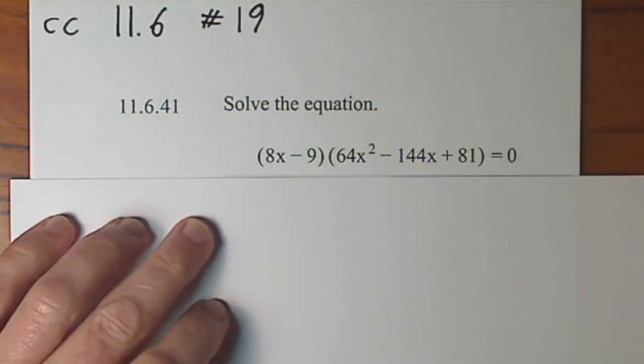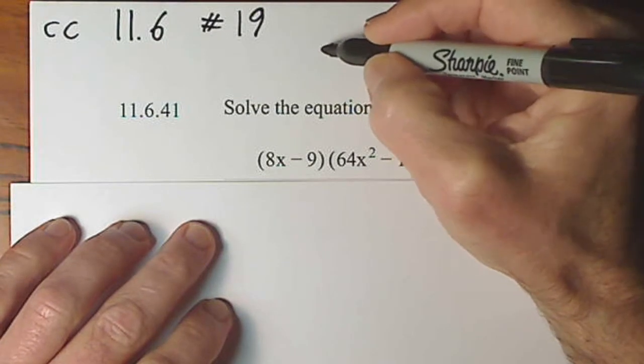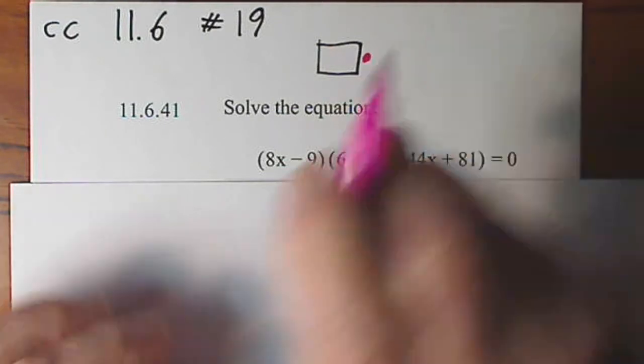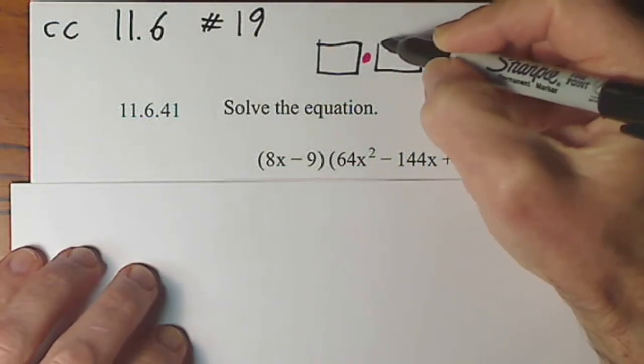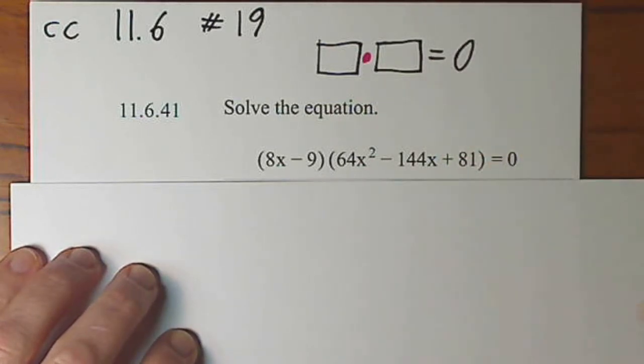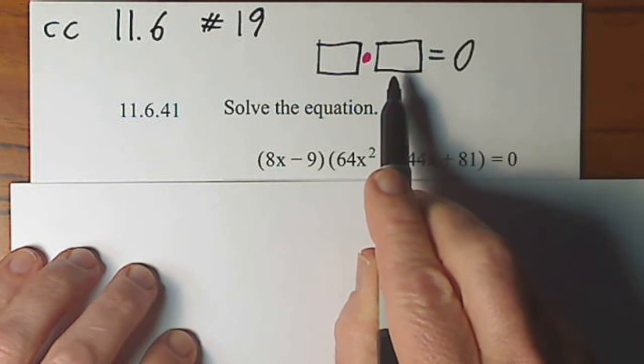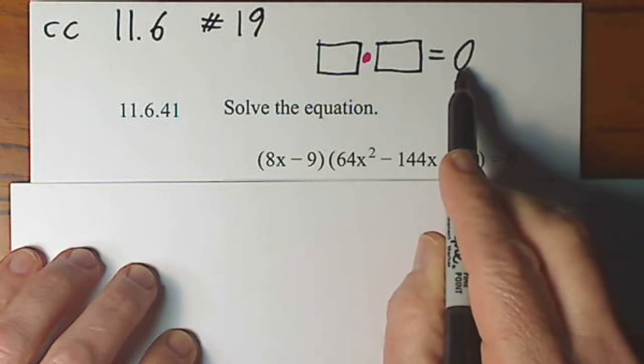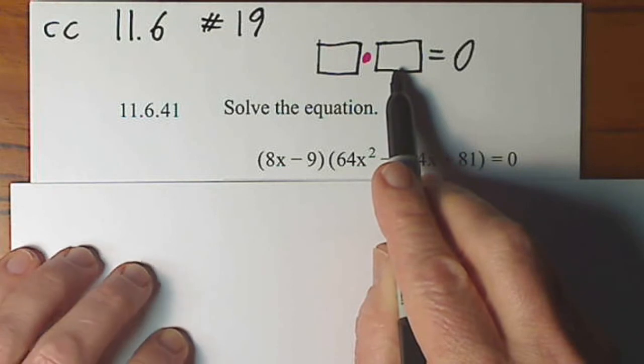We're going to use what's called the zero factor property, and the idea is if you have something times something and it's equal to zero, one of these two factors must be zero. Convince yourself of that. The only way to multiply and get zero is if at least one of these is zero. Perhaps both of them are.